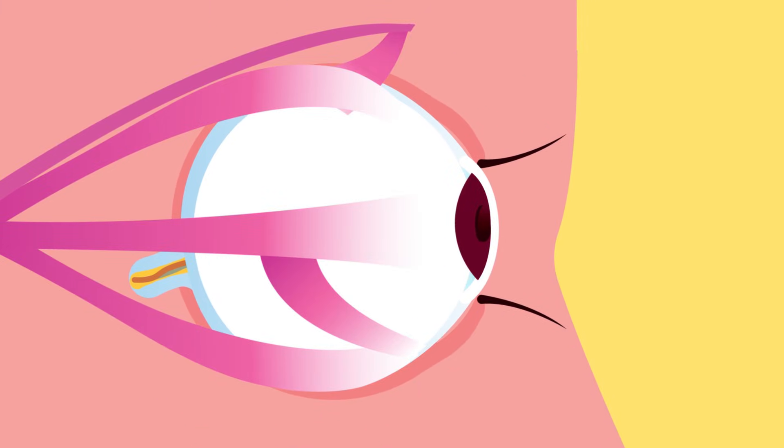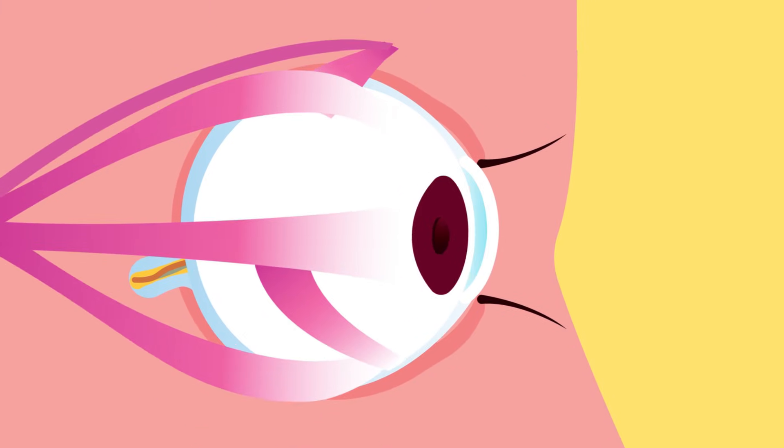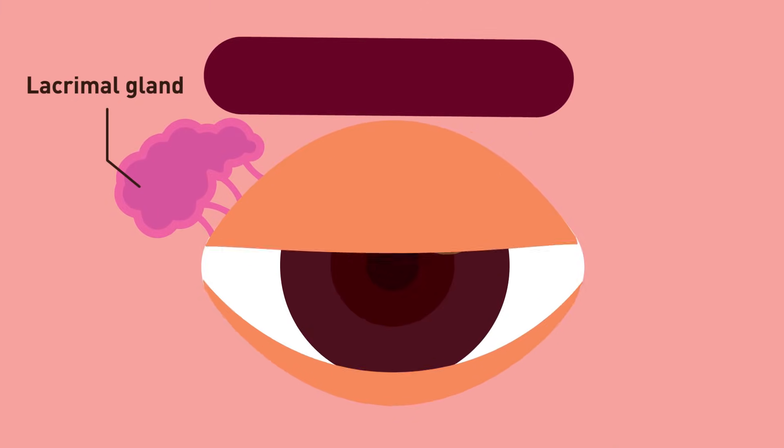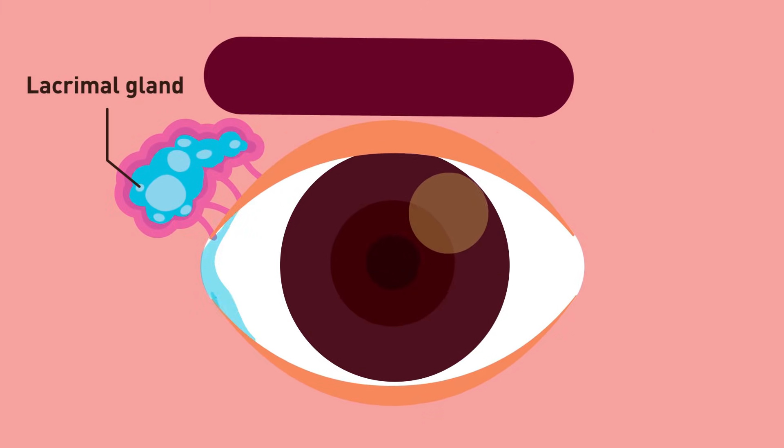Eye muscles hold the eye in place. The lacrimal gland, or tear gland, secretes tears.